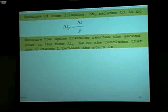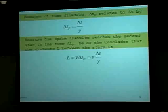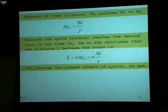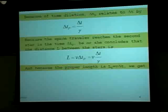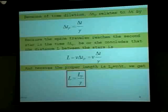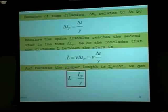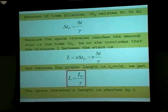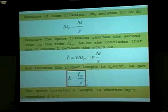Because the space traveler reaches the second star in the proper time, she concludes that the distance L between the stars is equal to their velocity times the proper time, which would be equal to the velocity times the time measured in the rest frame divided by gamma. So the proper length measured in the rest frame is equal to the velocity times the time in that frame, speed times delta T. So the length in the moving frame is equal to the proper length divided by gamma. The space traveler's length is shorter by gamma, and gamma is always greater than one — so the moving observer sees a length contracted by a factor of one over gamma.